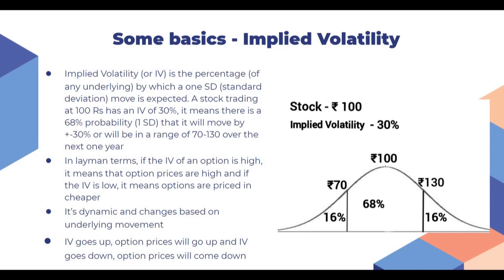Let us say a stock is trading at 100 rupees and the implied volatility is 30%. That means there is a 68% probability - which comes from one standard deviation - that the stock will remain in the range of plus or minus 30%, which is 70 on the lower side and 130 on the upper side. When we talk about IV it usually refers to a one-year period.